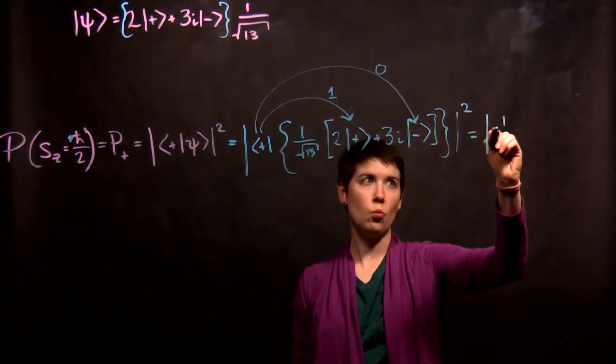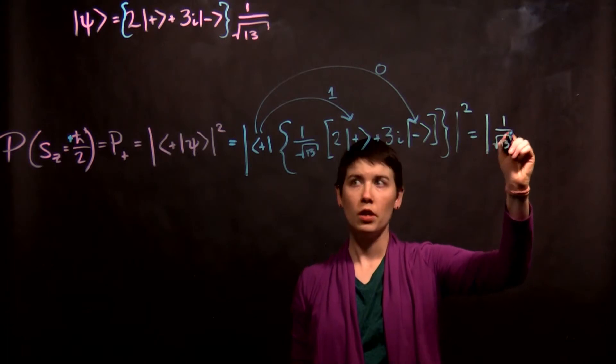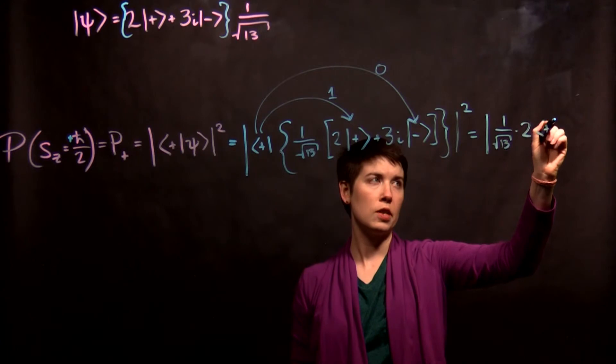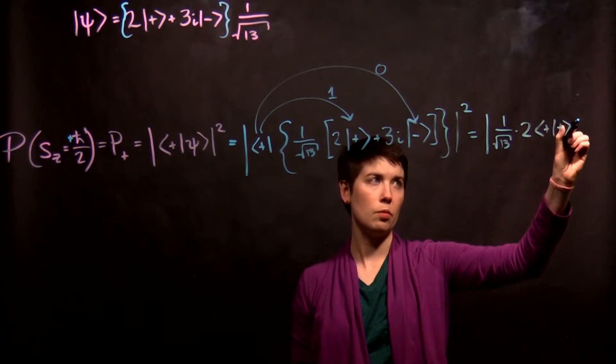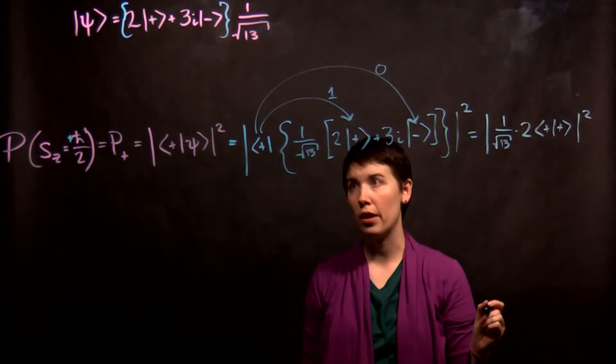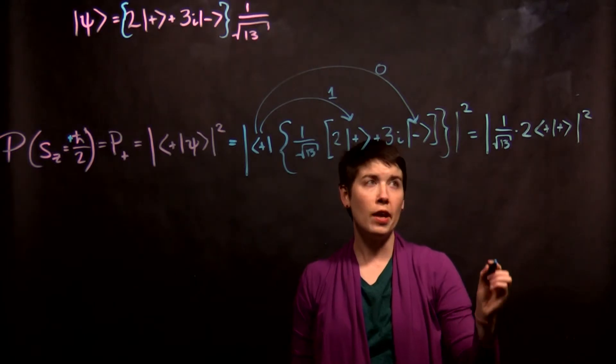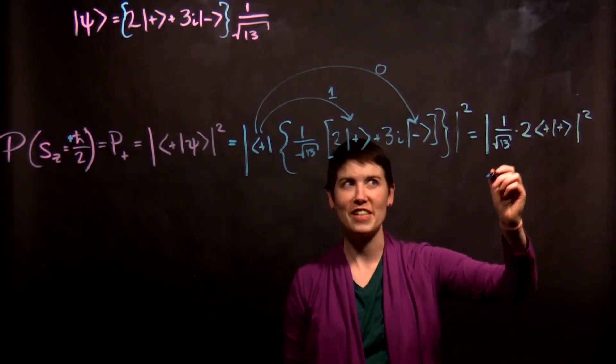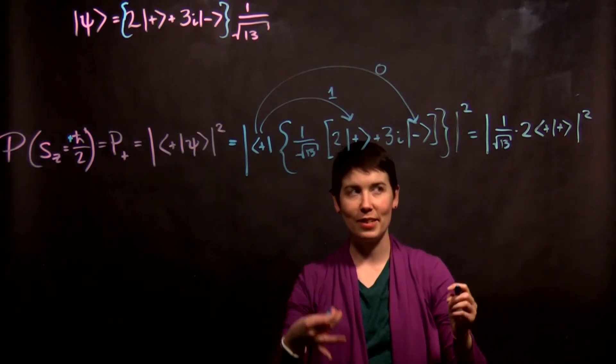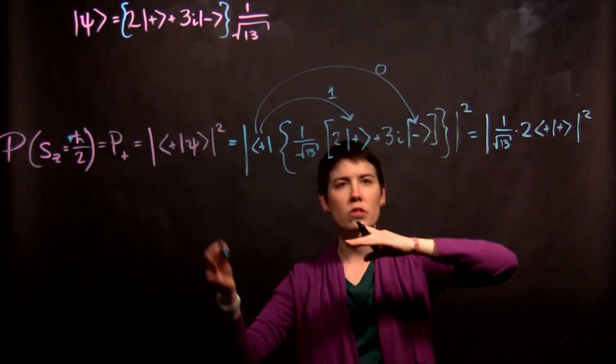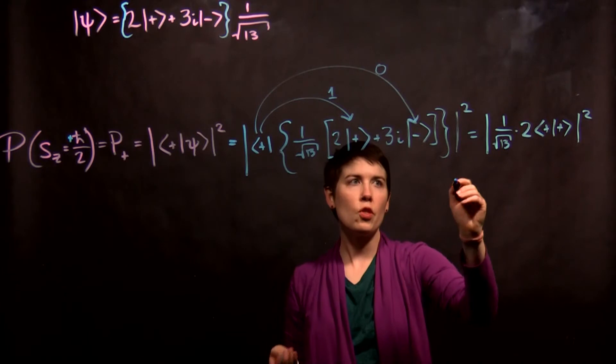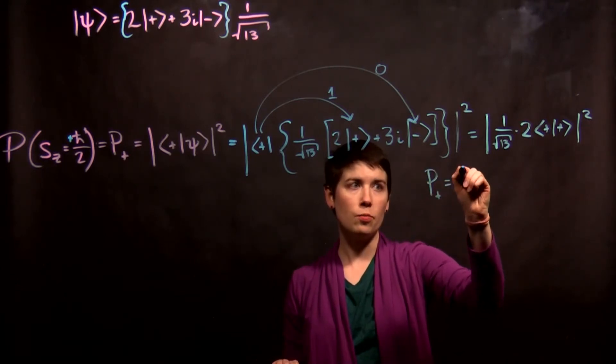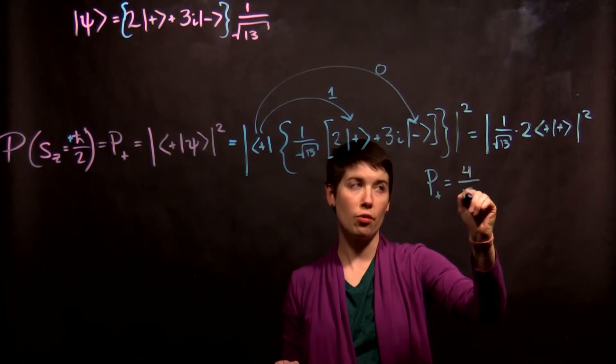What we're left with is 1 over the square root of 13, and then we have times 2 plus with plus, because that's going to become our 1, and that whole thing is squared. Notice that we're squaring that 2 and we're squaring the square root of 13. A common mistake that I see is that you maybe pull this out without squaring it. So that probability that we're left with then for that spin-up is going to be equal to 4 over 13.